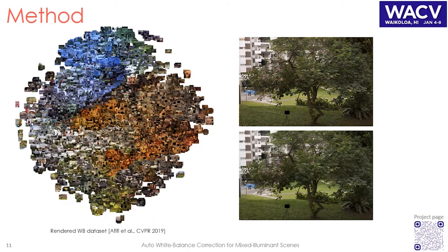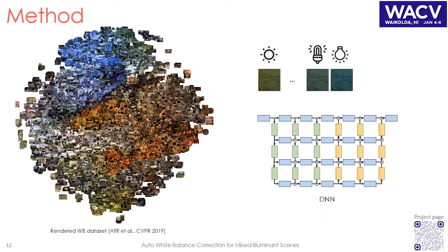We train our network on patches extracted from training data in the rendered white balance dataset. We feed our network with the same patch rendered with different white balance settings. The network is tasked to predict the weighting maps to be applied to those patches, then we compare the output with the ground truth patch to compute our losses.